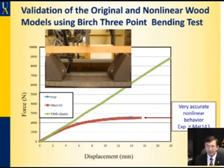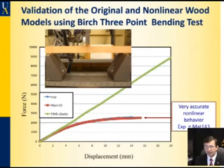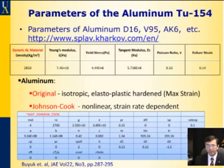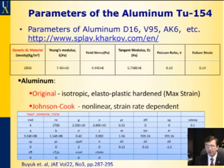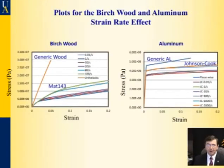Using a three-point bending experiment in my lab, we verified the simulated behavior of the birch wood beam and found that the generic material model is four times stronger than MAT 143. The force-displacement curve produced by MAT 143 almost exactly covers the experimental curve. For aluminum, we use two material models: a generic elastic-plastic model with material properties from the Russian database, and a recently applied FAA-developed non-linear model called Johnson-Cook, which is strain-rate dependent. This graph illustrates stress-strain produced using the two material models for birch on the left and two for aluminum on the right.